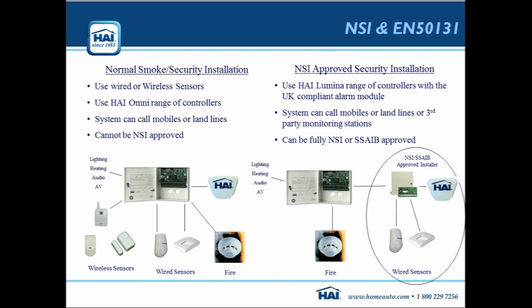Being as we have different codes for each user, we're able to set up things differently based on that user disarming the alarm. So there are some really nice things you can do when you incorporate security functions into a home automation solution. The first thing we have to get our head around is the options we have for how we can do security within the HAI system.